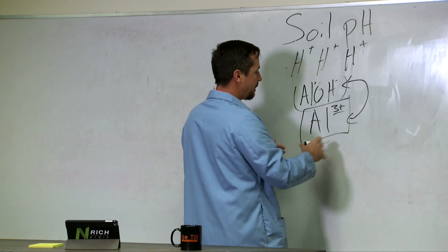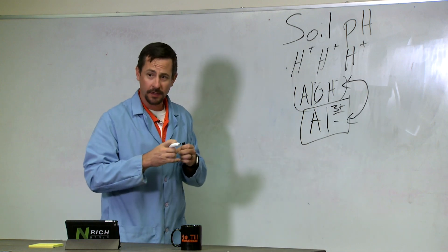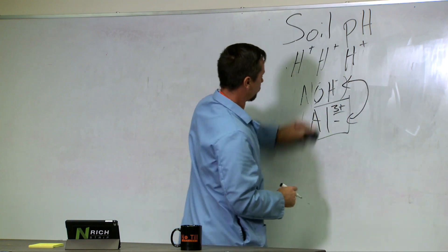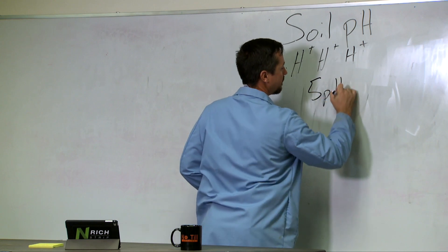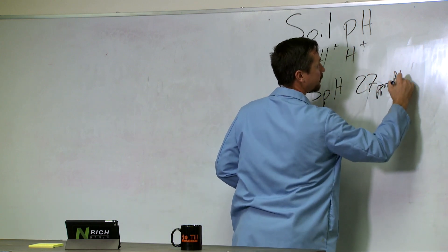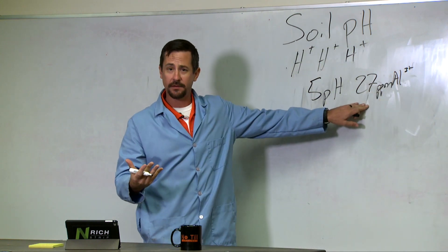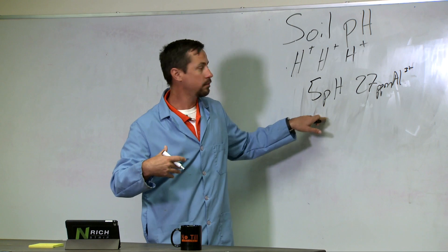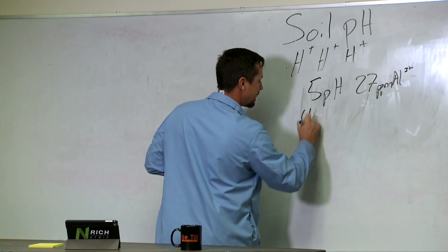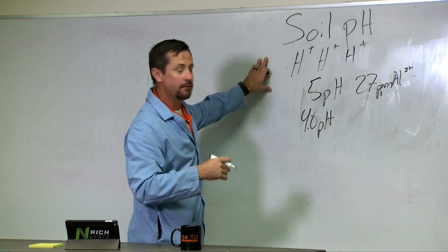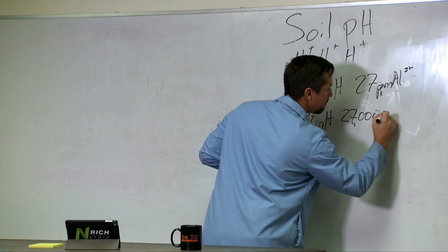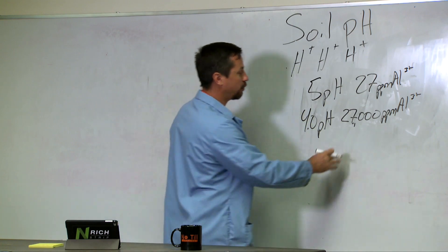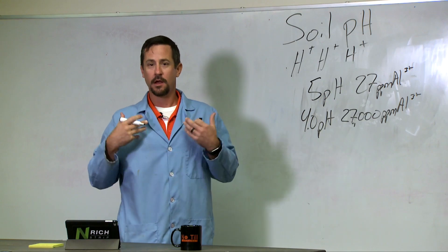The concentration of aluminum in the soil is affected greatly by pH. At a pH of 5, there's approximately 27 parts per million of aluminum 3+. Wheat becomes sensitive at 25 ppm or less, so at pH 5.0 we're already becoming toxic. If we move down to a pH of 4.0, because of the way the chemistry works, we now have 27,000 ppm aluminum 3+. That's why trying to grow something at a pH of 4 is near impossible — it's a thousand times the concentration that causes root damage.